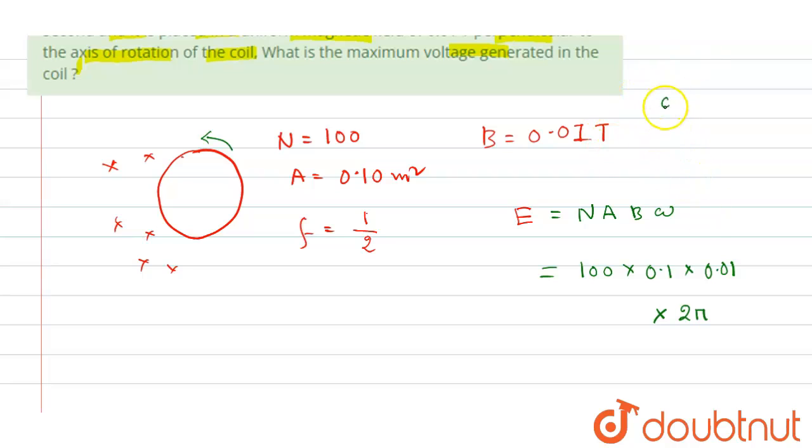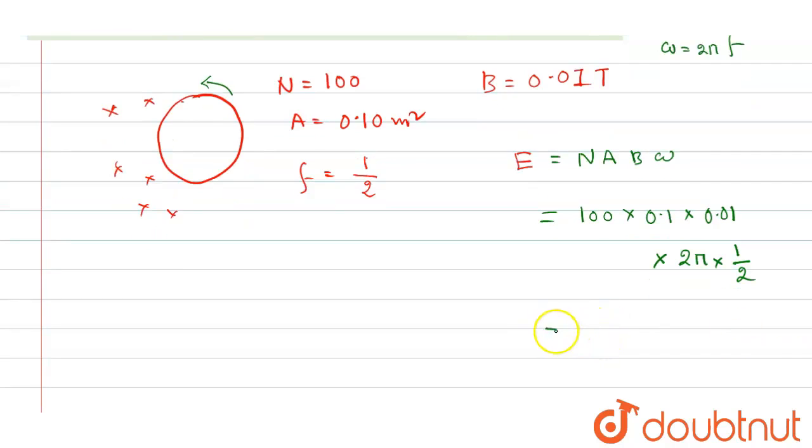We know that omega is equal to twice pi f, which is equal to twice pi into frequency. So the frequency is given as half, so it will be...